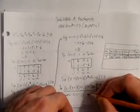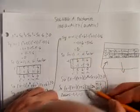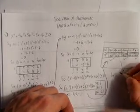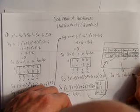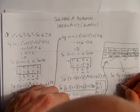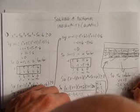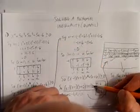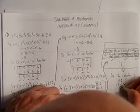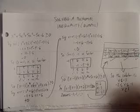From the interval table, the expression is positive for x less than negative 3, between negative 2 and negative 1, and x greater than 1. Since the original inequality is greater than or equal to 0, we also include the zeros. So the full solution is: x less than or equal to negative 3, or x greater than or equal to negative 2 and less than or equal to negative 1, or x greater than or equal to 1. And that is our solution.